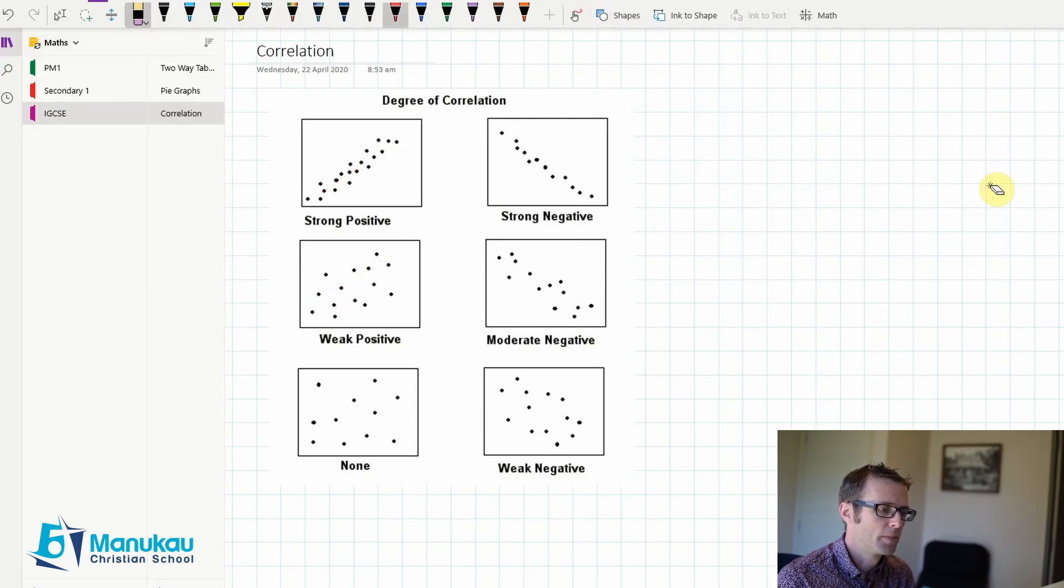Now, negative correlation is going down from left to right. So, you can see that goes down and this one goes down. And here we've got another one vaguely going down. So, that's the difference between positive and negative. Positive from left to right goes up and negative left to right goes down.